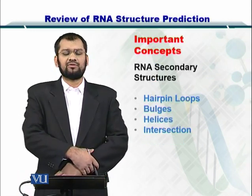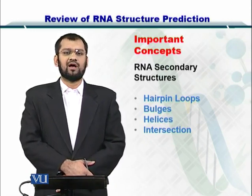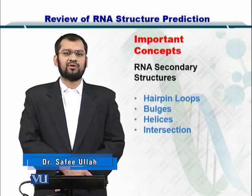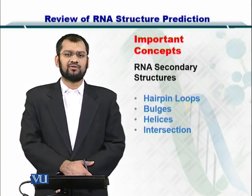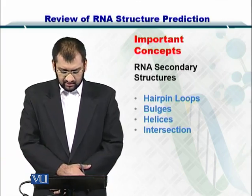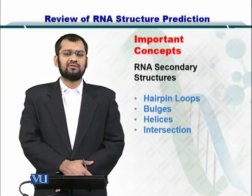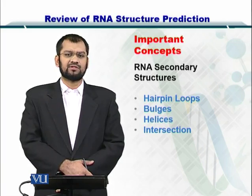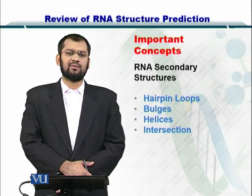The need for RNA structure prediction led us to study the various structures present in RNA molecules. We came to know that there were four general types of secondary structures: hairpin loops, bulges, intersections, and helices. These secondary structures come together to create tertiary structures, which then go on to perform a variety of functions within the biological system.